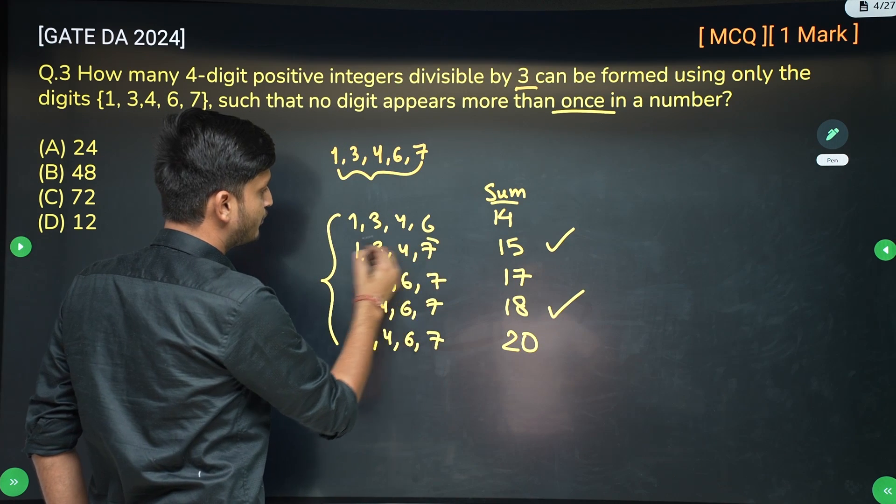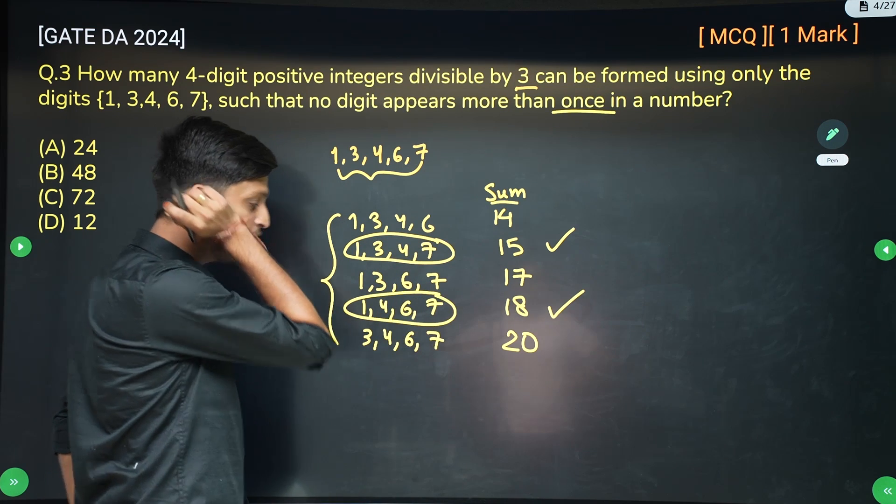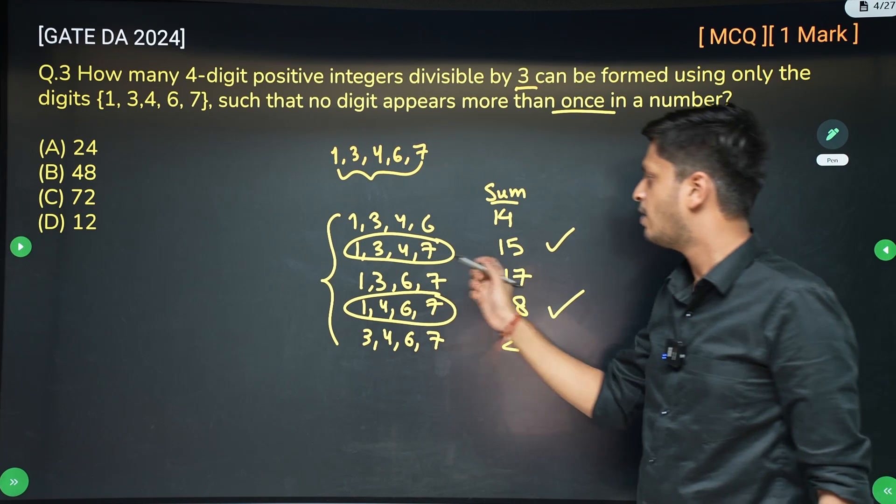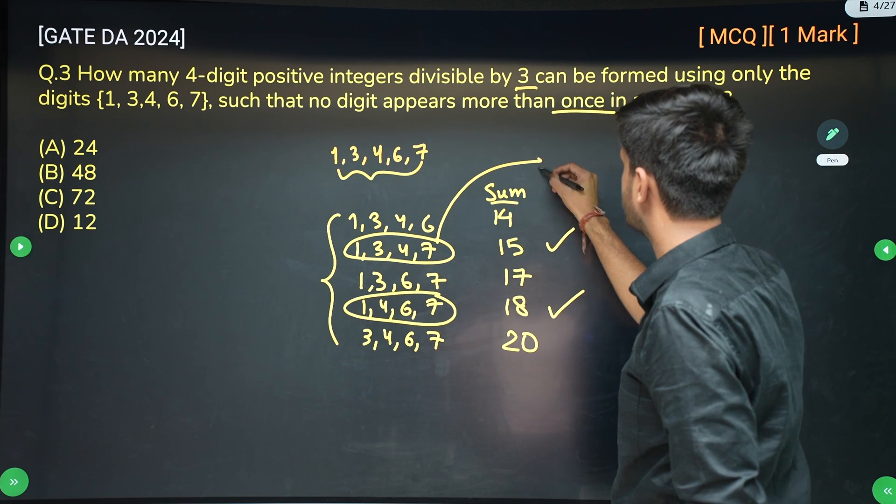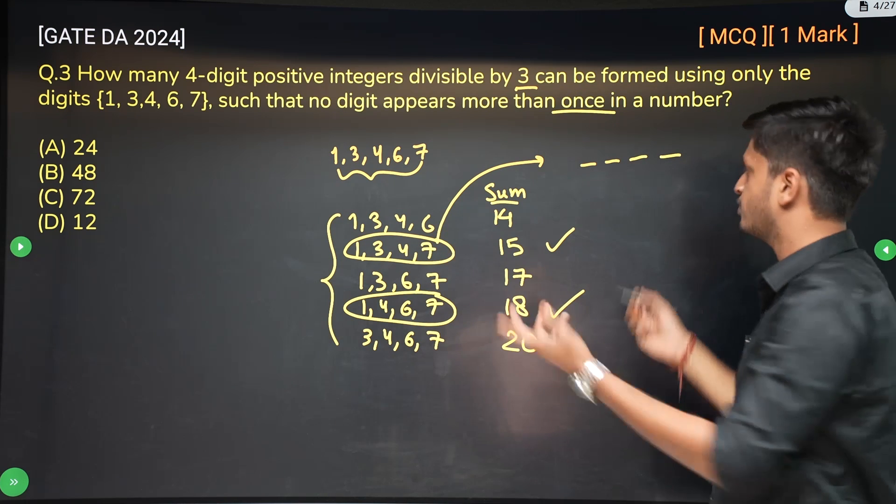So either you pick 1, 3, 4, 7 or you pick 1, 4, 6, 7. And you make any number using these 4 digits or these 4 digits, that number will be divisible by 3. So how many numbers are possible using 1, 3, 4, 7? So it is like filling 4 places with 4 objects. 4 factorial.